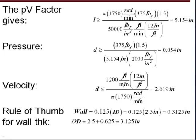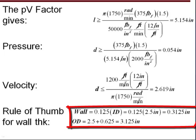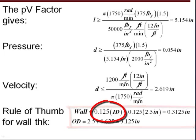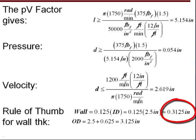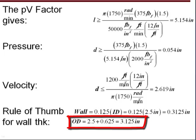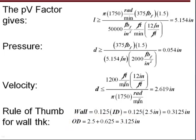And one more dimension is needed, and that's the OD. For this, we use the rule of thumb that the wall thickness is 0.125 of the ID. This says the wall should be about 0.3125 of an inch. And then when we calculate the OD, that means that the OD should be around 3.125 inches. So we're looking for a bearing that is 2.5 inch ID, 3 inch OD, and about 6 inches long.